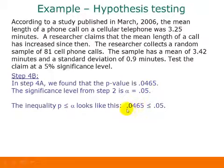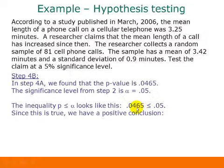The question is, is this a true statement or false statement? It's true because .0465 is less than .05. Since it's true, that means we're going to have a positive conclusion, which is reject the null hypothesis. This is all we need to write for our initial conclusion: either reject the null hypothesis or do not reject the null hypothesis.